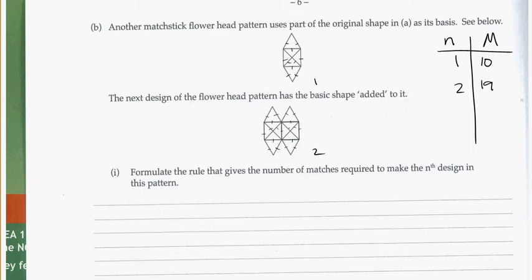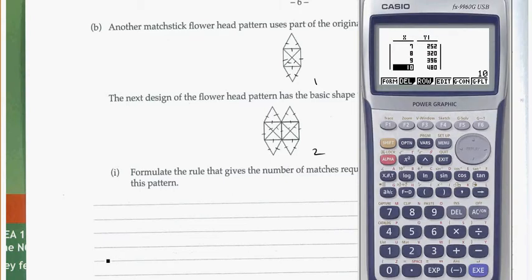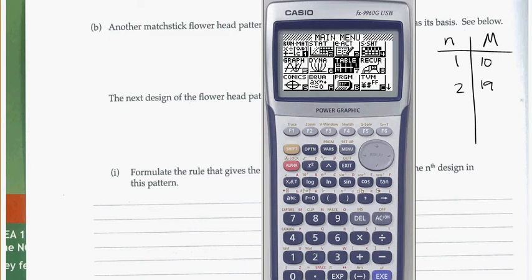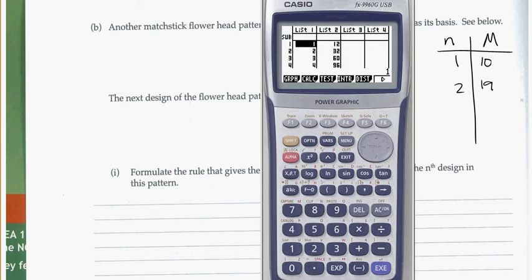So again, we can use our calculator using the STAT function. If we come back in here, go back to menu, STAT, and we are going to clear ourselves a little bit of data. We can go to delete all, delete it, and we'll delete this column as well. Just 2 points to enter: 1, 2, and we've got 10 and 19. Put them in.